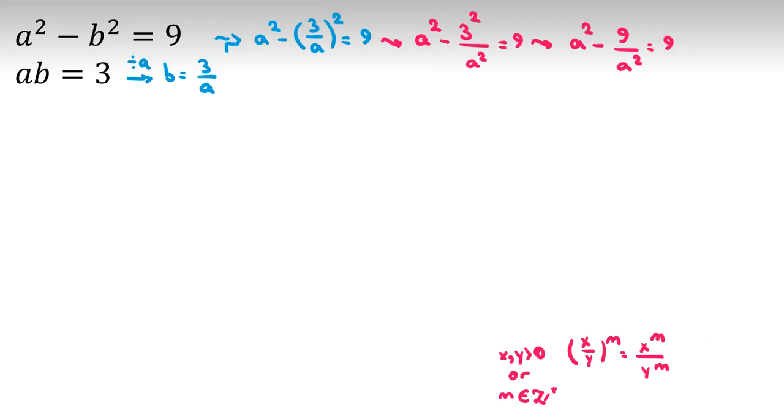Next step, I don't like denominator a squared. I multiply both sides by a squared. So, we multiply both sides by a squared. Then, we have a to the 4.